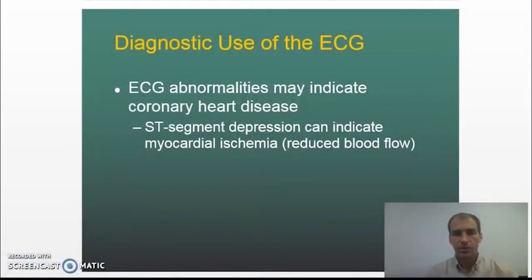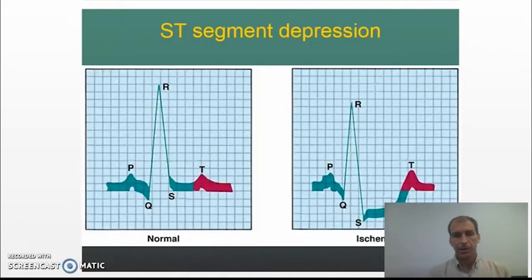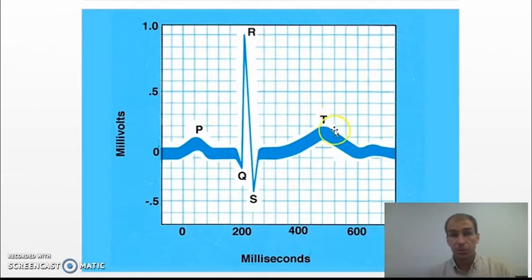In this video we're going to look at a more practical use of the EKG — basically what happens, why we use it, what happens if things go wrong, and what if the normal heartbeat isn't normal. This is our standard EKG strip: P wave, QRS, and T wave — atrial depolarization, ventricular depolarization, and ventricular repolarization.